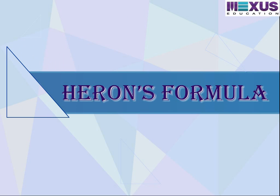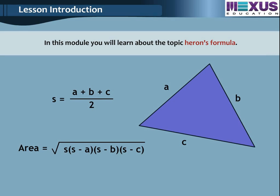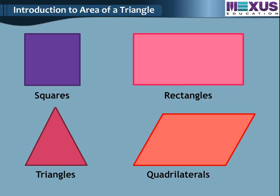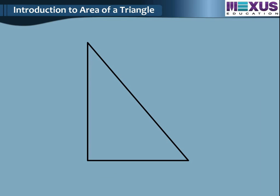In this module you will learn about Heron's Formula. We have come across different shapes like squares, rectangles, triangles and quadrilaterals. We have also seen how to calculate the area and perimeter of these shapes. For calculating the area of a triangle, we use: area of triangle is equal to half multiplied by base multiplied by height.